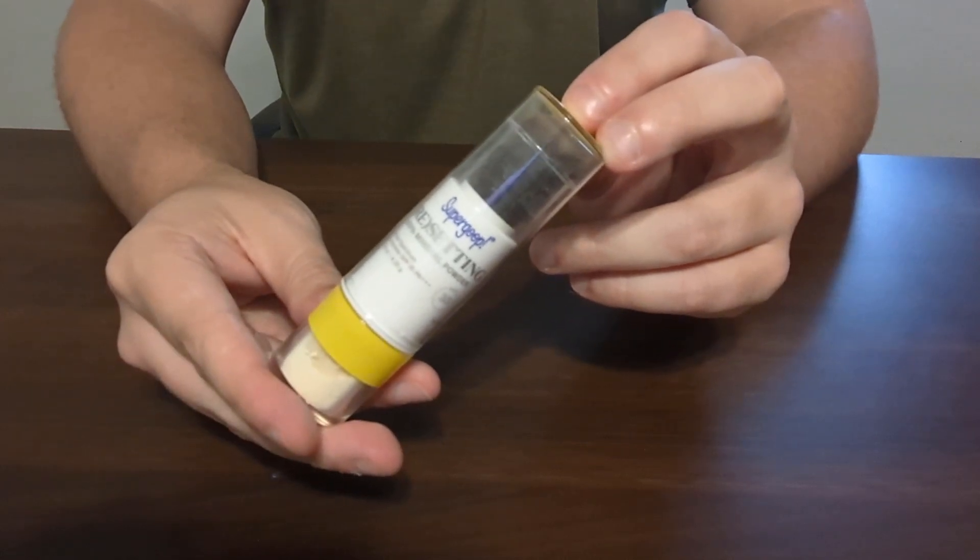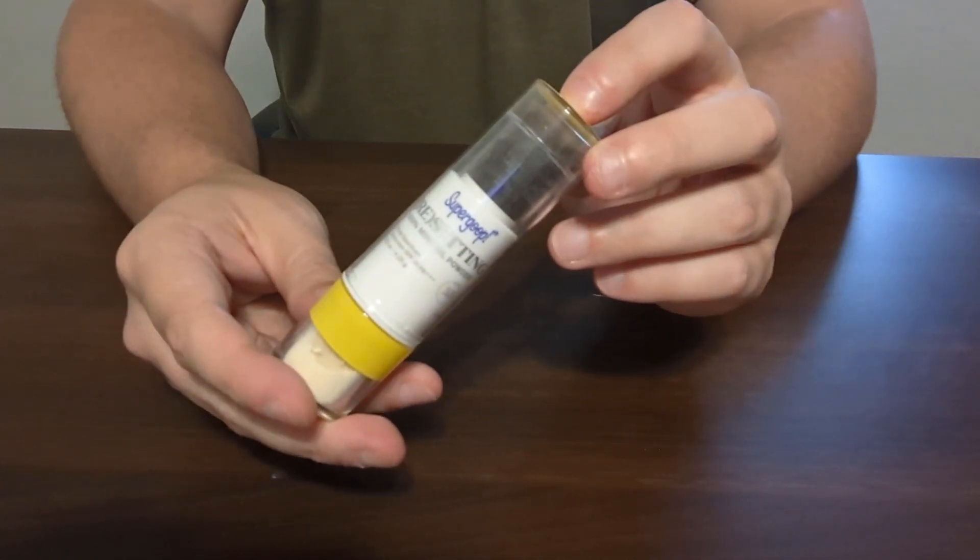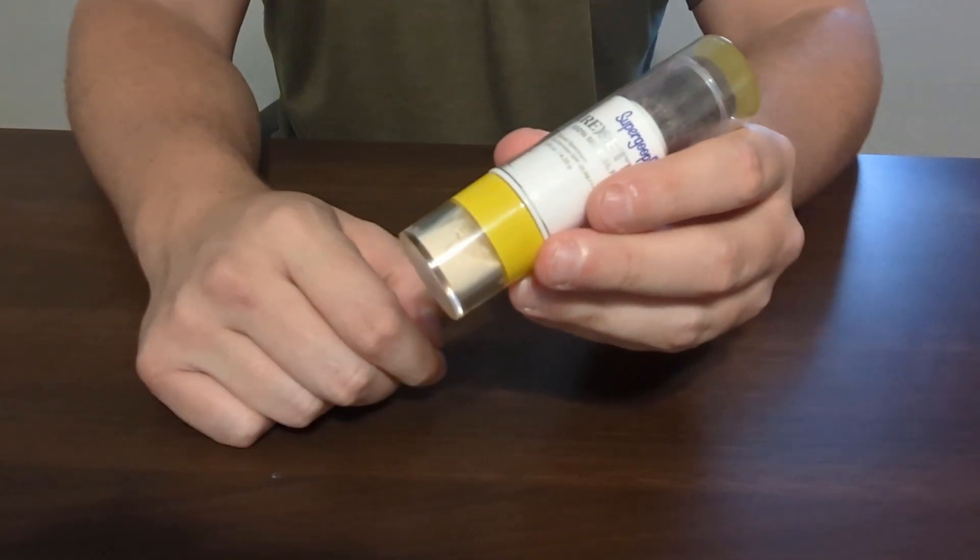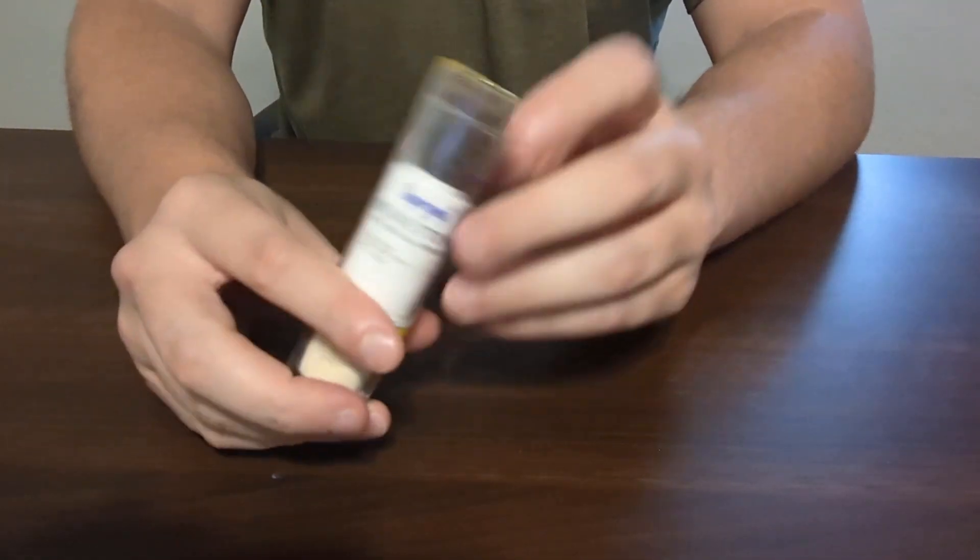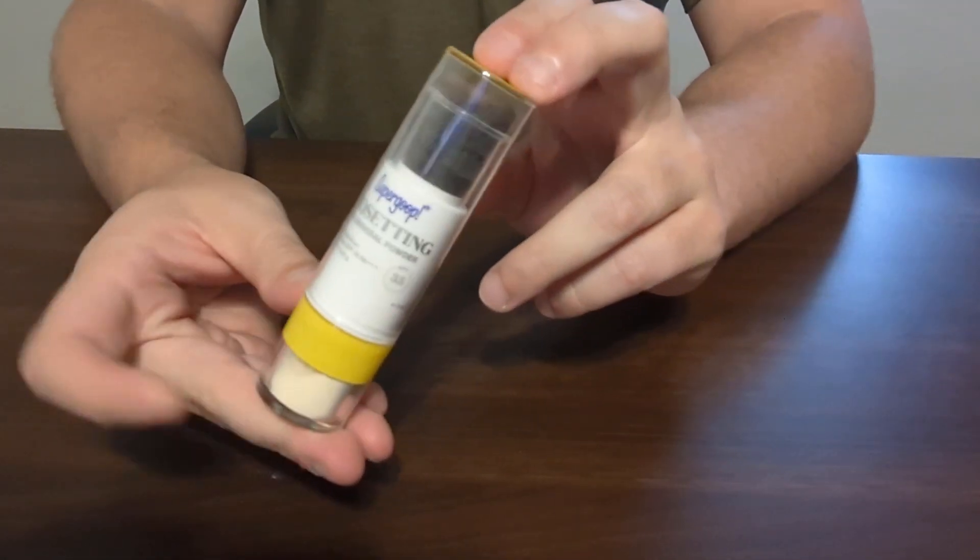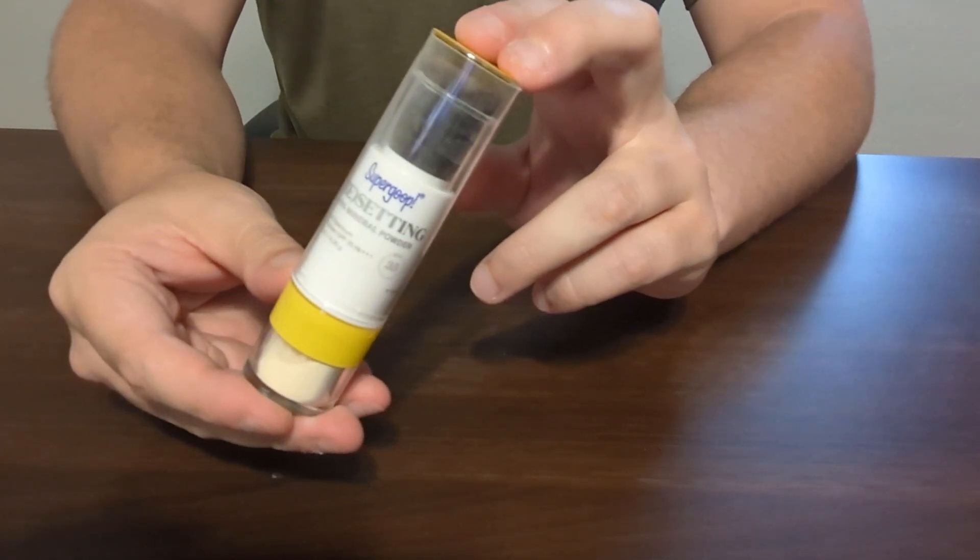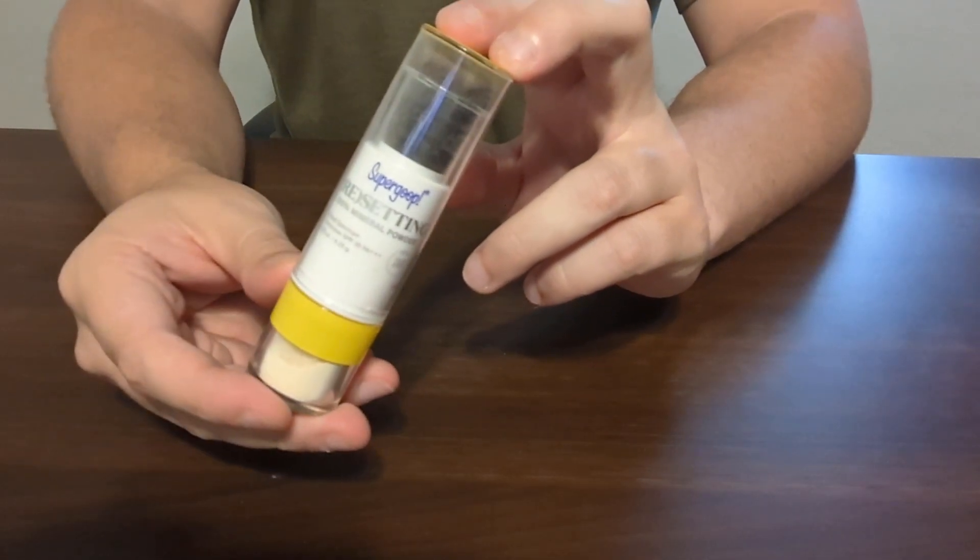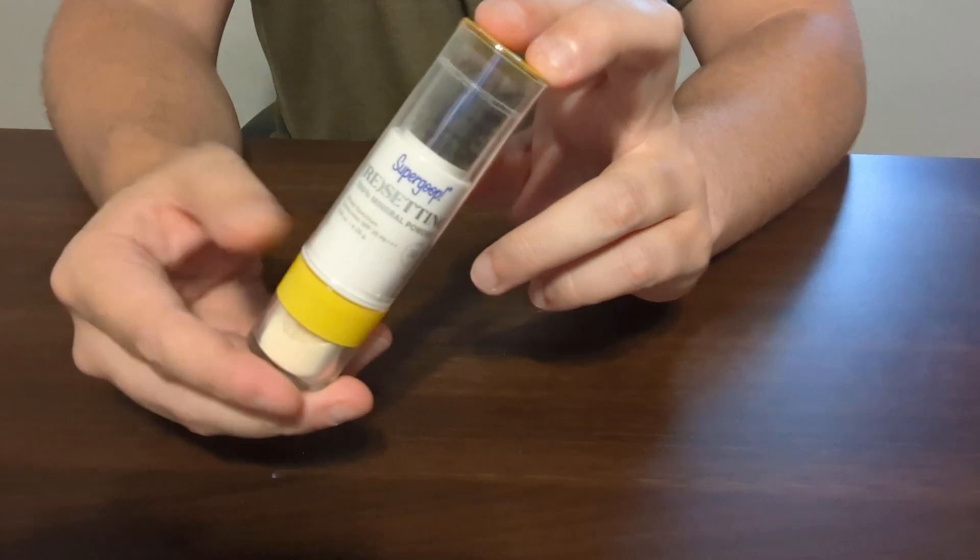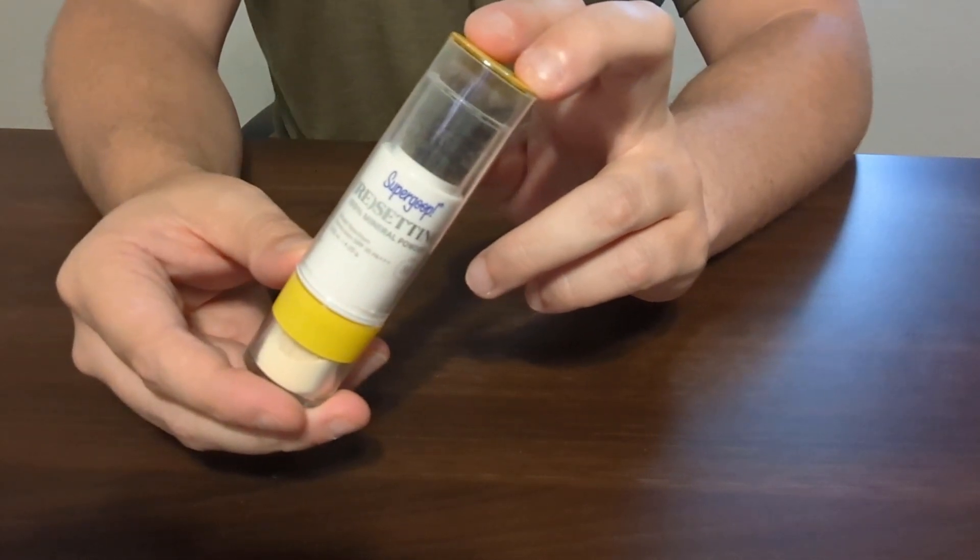This right here is the Supergoop Resetting SPF 35 with the Translucent Mineral Powder on the bottom there. I am a fan of these Supergoop products, especially when it comes to things that have SPF in them, just because where I'm at, it is typically always sunny here in California.